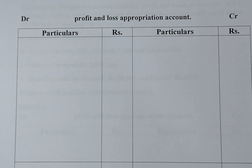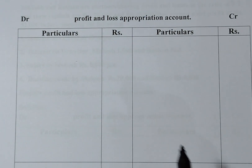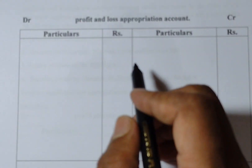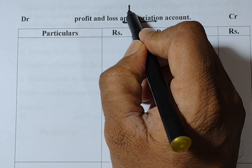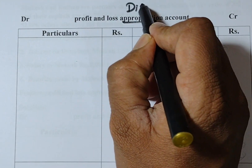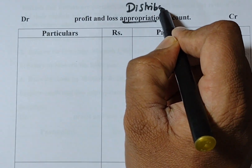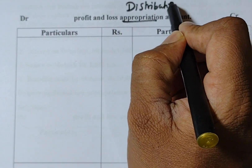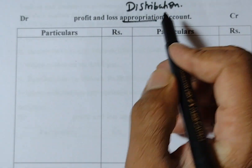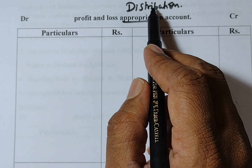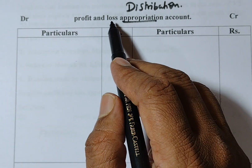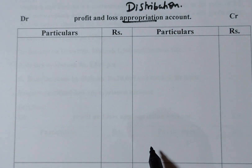Welcome to Shokumar classes. Today my topic is Profit and Loss Appropriation Account. Appropriation means distribution. Therefore, profit and loss appropriation means distribution of profit and loss among the partners.